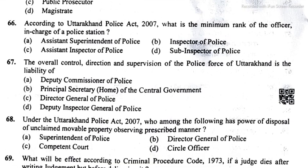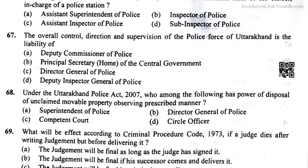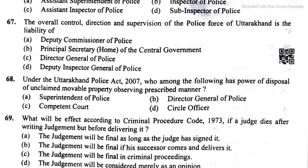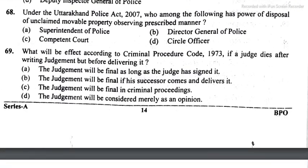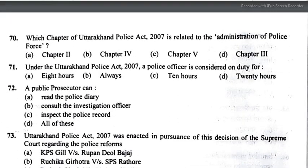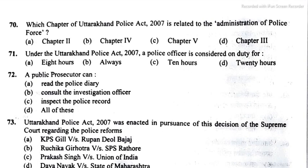Question 67: the answer is option C, that is Director General of Police (DGP). Question 68: the answer is option A, superintendent of police. Question 69: the answer is option B — the judgment will be final if the successor comes and delivers it. Question 70: the answer is option D, that is chapter 3.